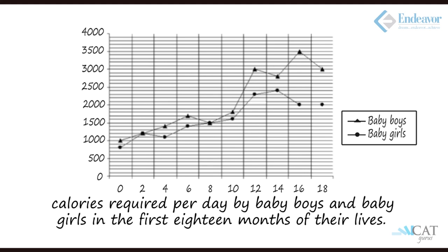In the same graph we have boys and girls — two lines. Now, the difference between each corresponding point is the same, which is two months: 0, 2, 4, 6, 8, 10, 12, 14, 16, 18. If a line is steeper or at a higher elevation, it shows a higher increment. If it is flatter, it shows a lower increase. If the line goes down, there is a decrease. By looking at the angle of inclination or decline, we can directly say whether there is a high increase, low increase, or decrease.